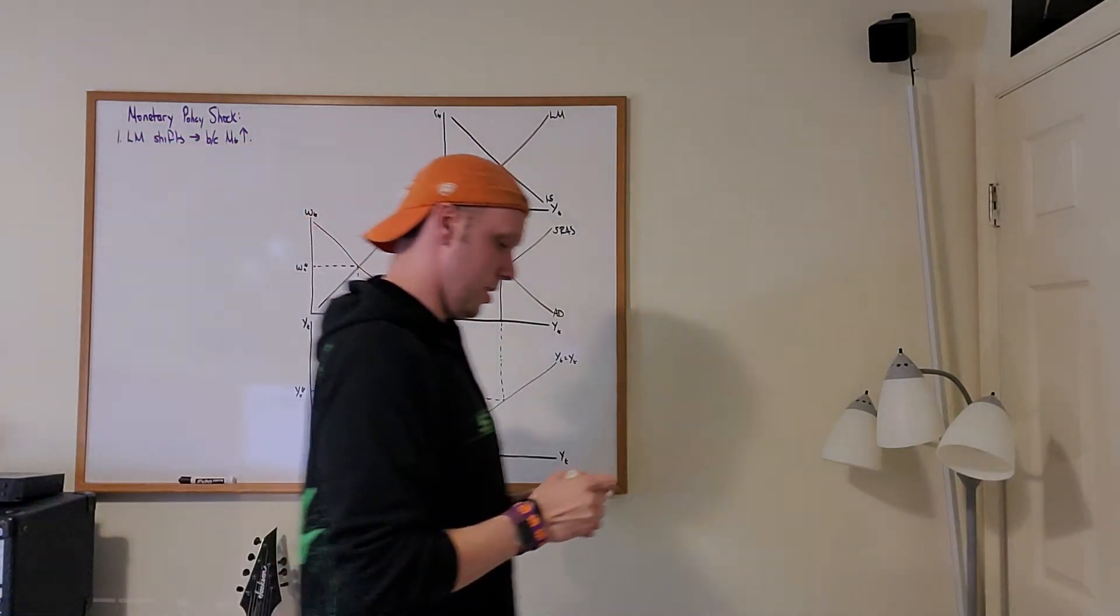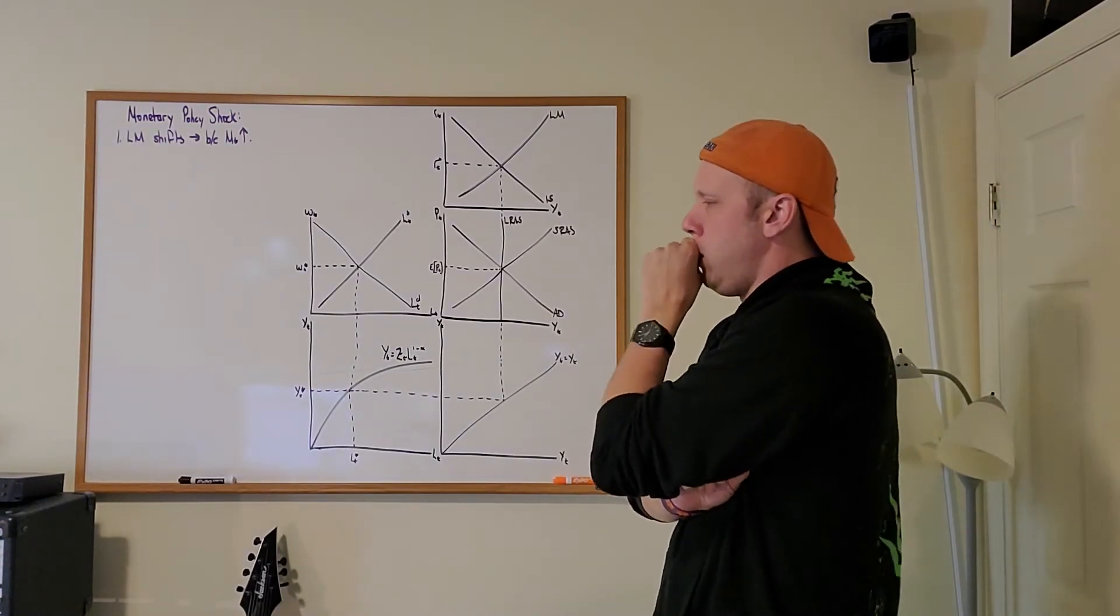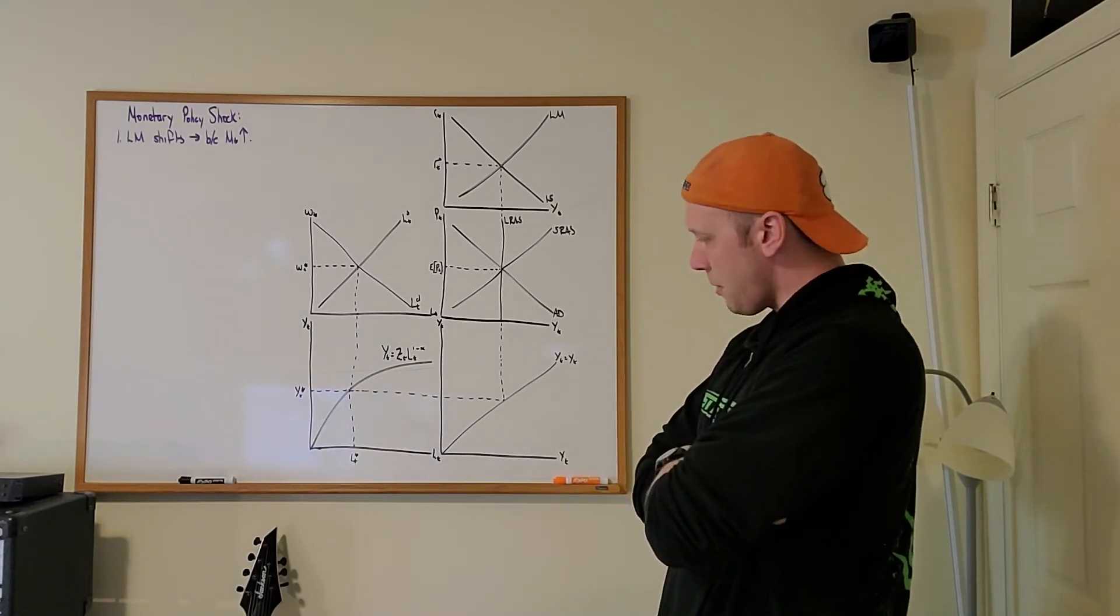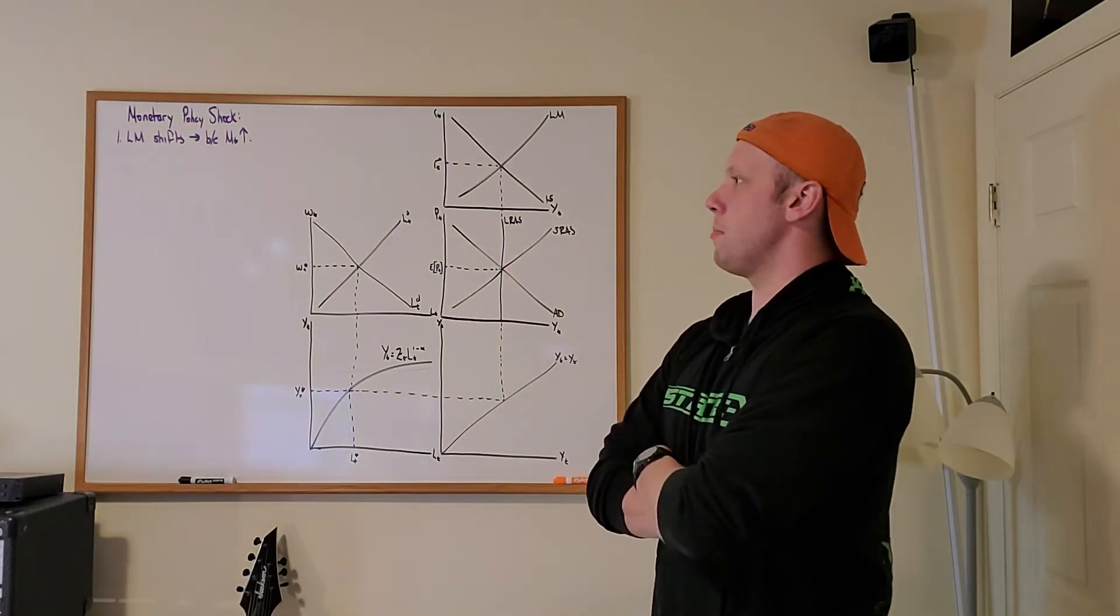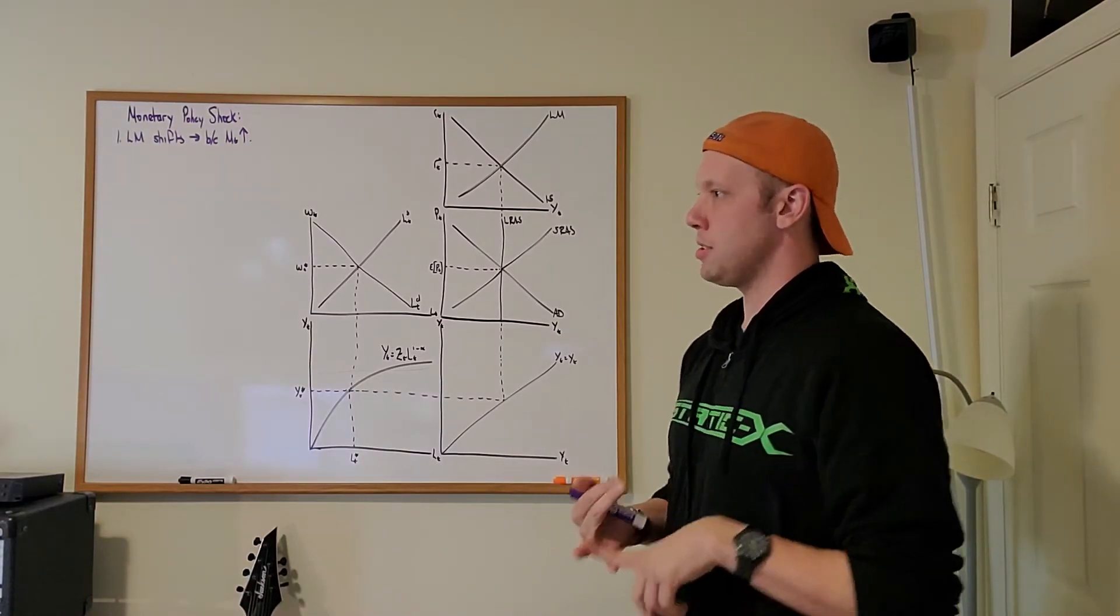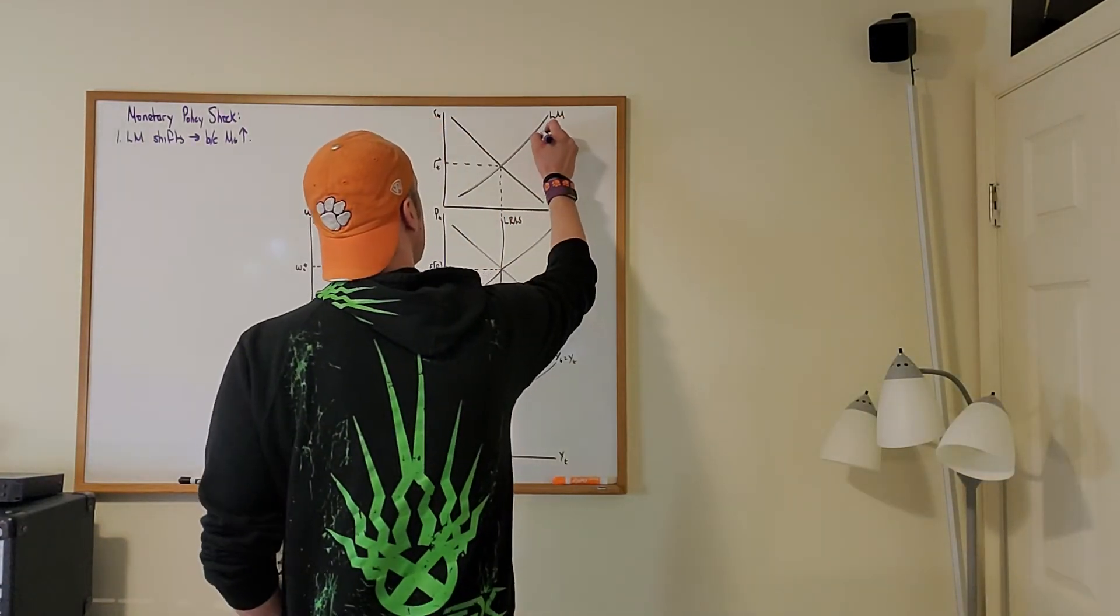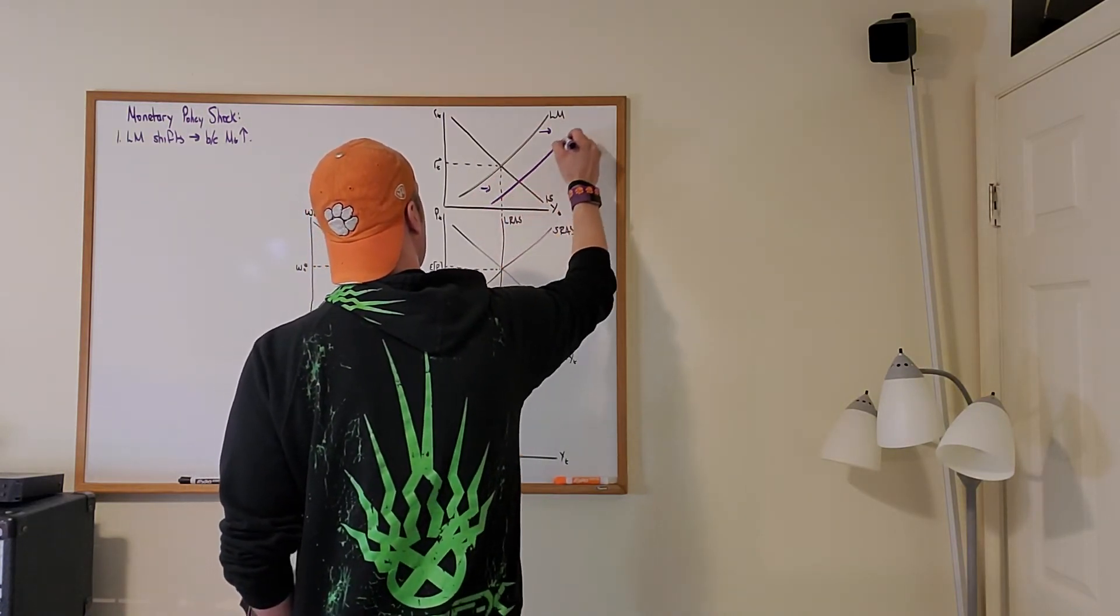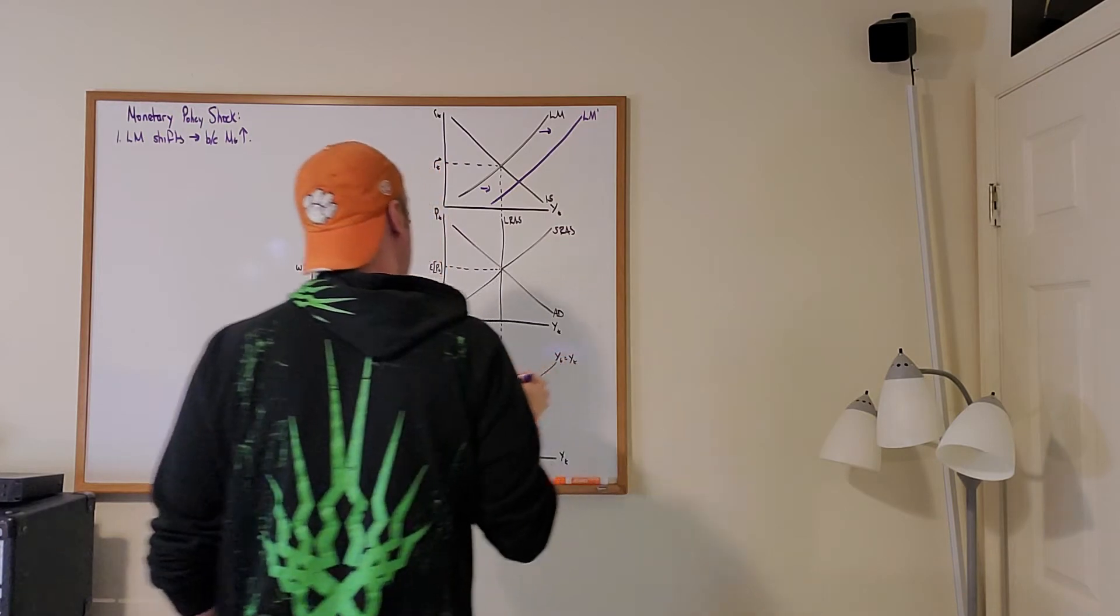The first thing that happens in this shock, the source of this shock, we'll say, is an increase in the money supply. So, the amount of money in the economy is going to increase. Now, when that happens, right, the LM curve is going to shift to the right. Because remember, whenever money increases, the LM curve moves to the right. So, the LM curve and money are always going to be moving in the same direction. So, we increase the money supply, which triggers a shift in the LM curve, giving us this. Call it LM1.